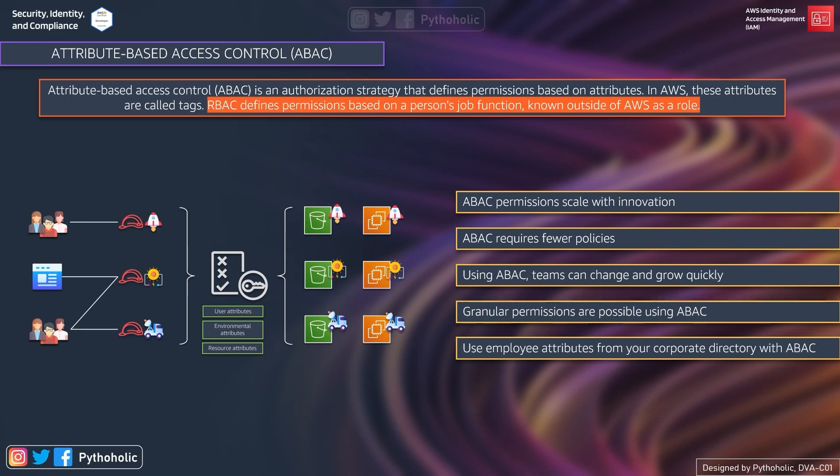For example, if you were part of project Rocket and you're changing teams, the admin can simply remove or update your tag to point to the new project. Similarly, if you need to add new users, you can attach the appropriate tags to them and they will immediately have the correct access.